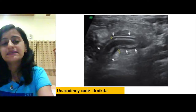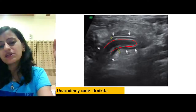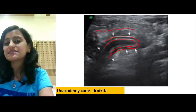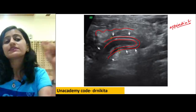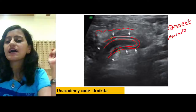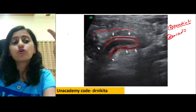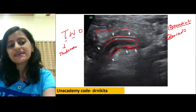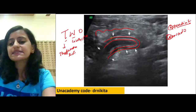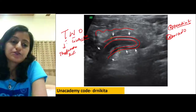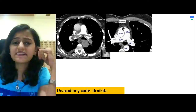RIF pain with a blind-ending, thickened tubular structure with surrounding echogenic mesentery on ultrasound is appendicitis. Alvarado scoring is used for appendicitis; two points are given for tenderness in RIF and for leukocytosis (increased WBC count).